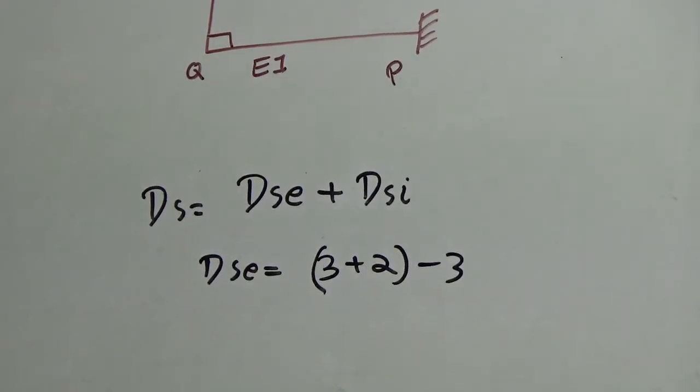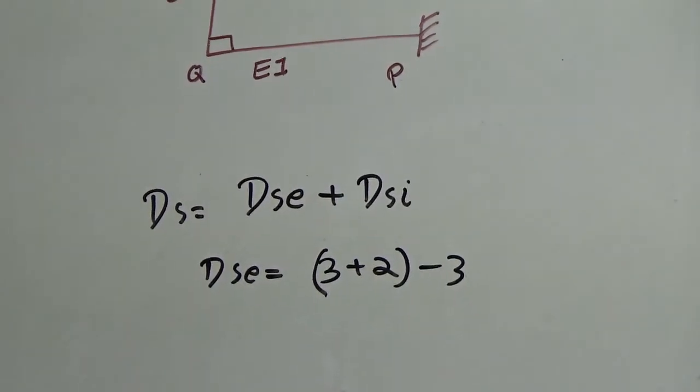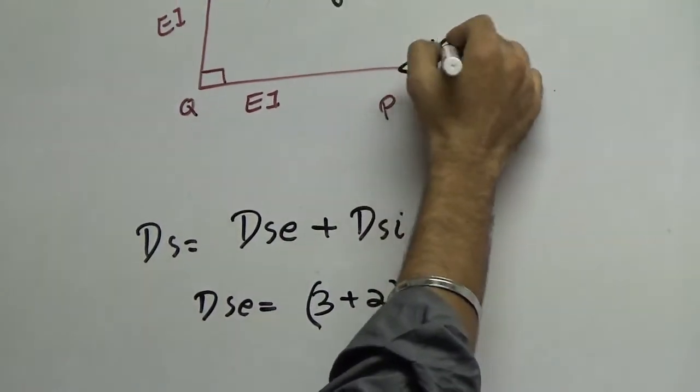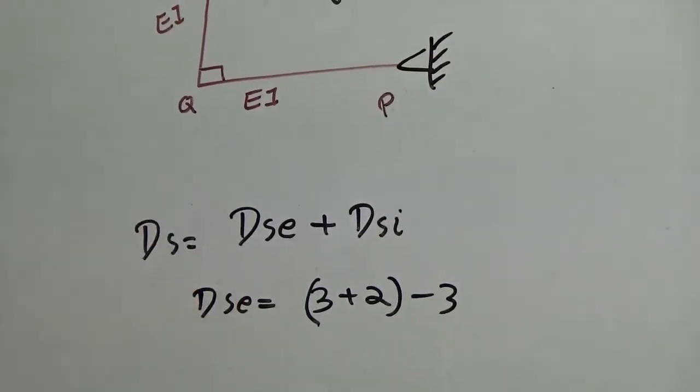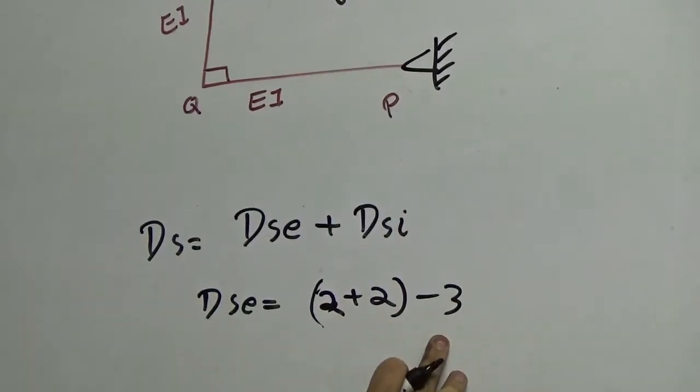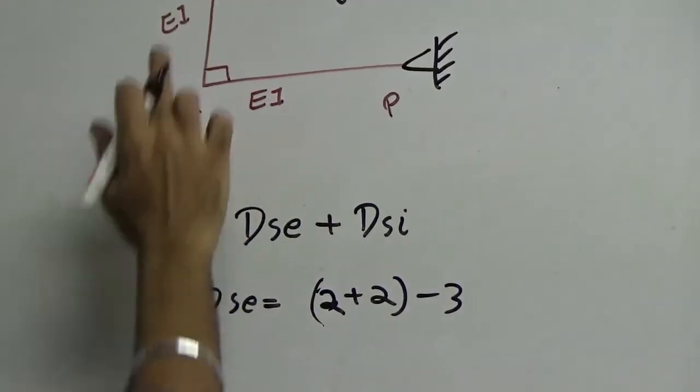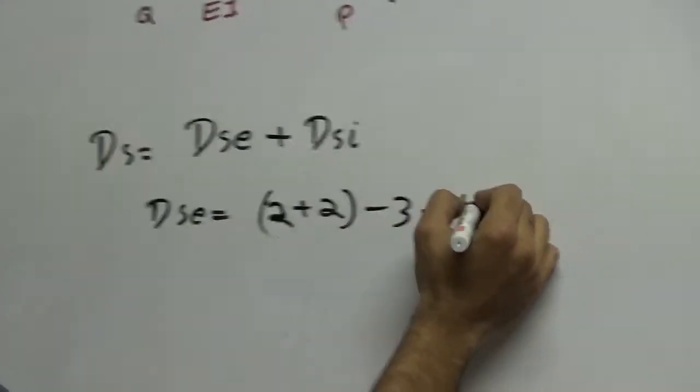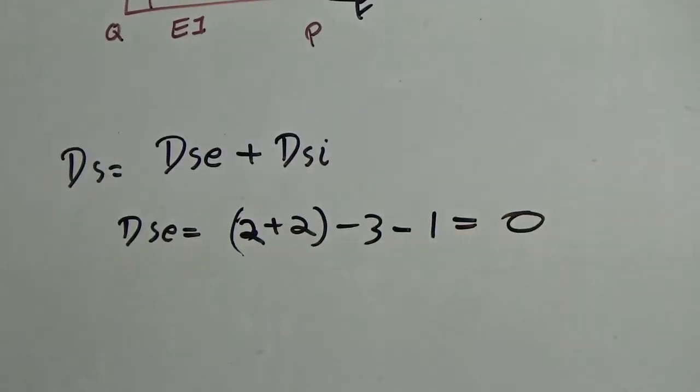This is an internal hinge. Now, internal hinge has one degree additional equation being provided by the system. So, in that case, we can simply, let me just check the problem one more time. So, I'm sorry, here it is a hinge. The problem is here it has a hinge. Now, in that case, it will be 2 here and 2 here and minus it will be the equilibrium equation. And because of this internal hinge, again, the summation of moment above this point will be 0. So, minus 1. So, your external indeterminacy comes out to be 0.